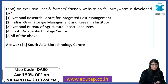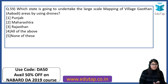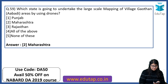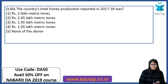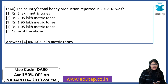Which state is going to undertake large-scale mapping of village Gautan Abadi areas using drones? The right answer is Maharashtra. The country's total honey production reported in 2017-18 was how much? The answer is 1.05 lakh metric tons.